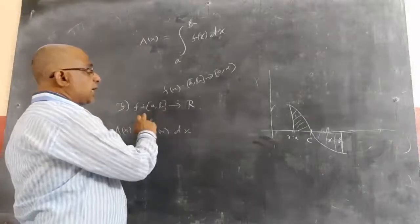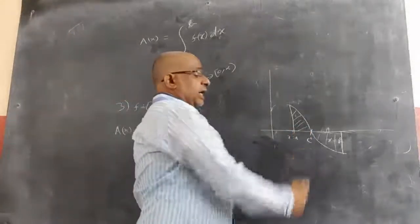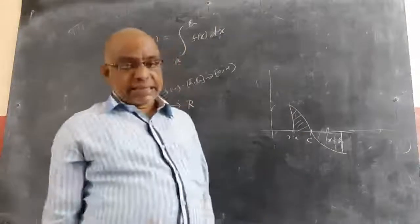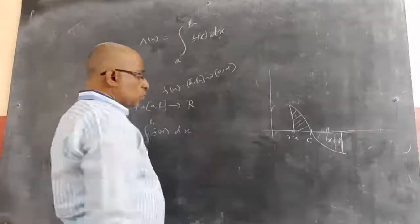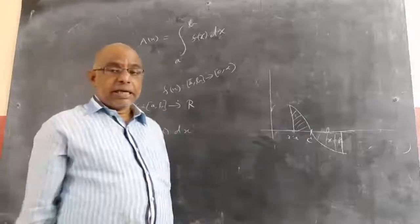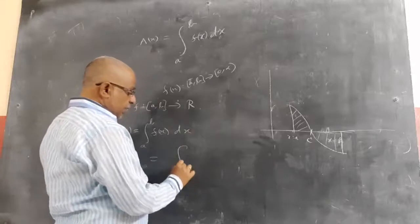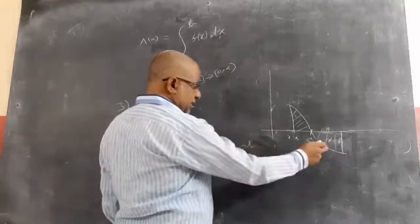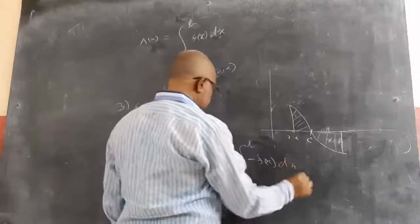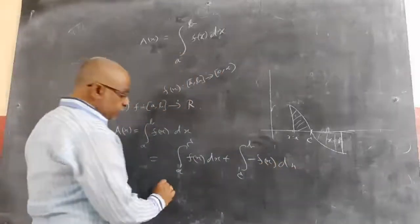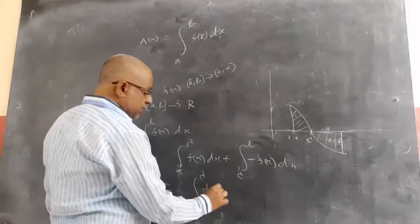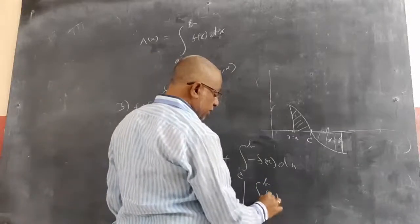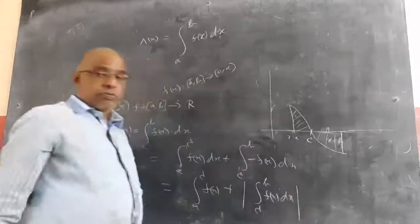What you have to do is: if the function is from [a, b] to R, and it is discontinuous at c, or not differentiable at c, or it is intersecting the x-axis at c, then split into two parts — a to c and c to b. So you can write: integral of a to c f(x) dx plus integral of c to b minus f(x) dx, since from c to b it is negative. Area cannot be negative.